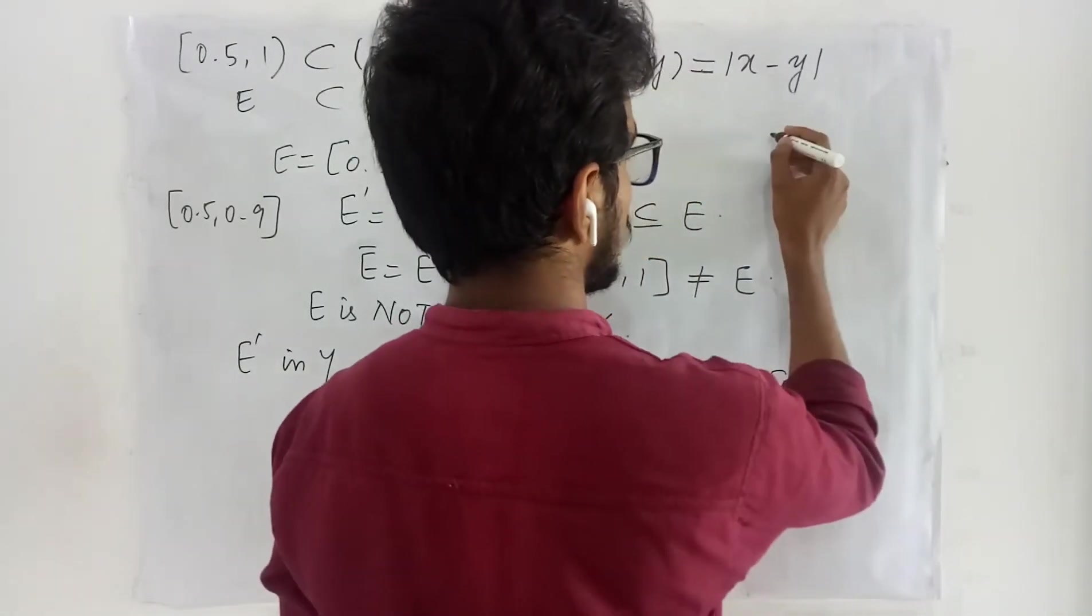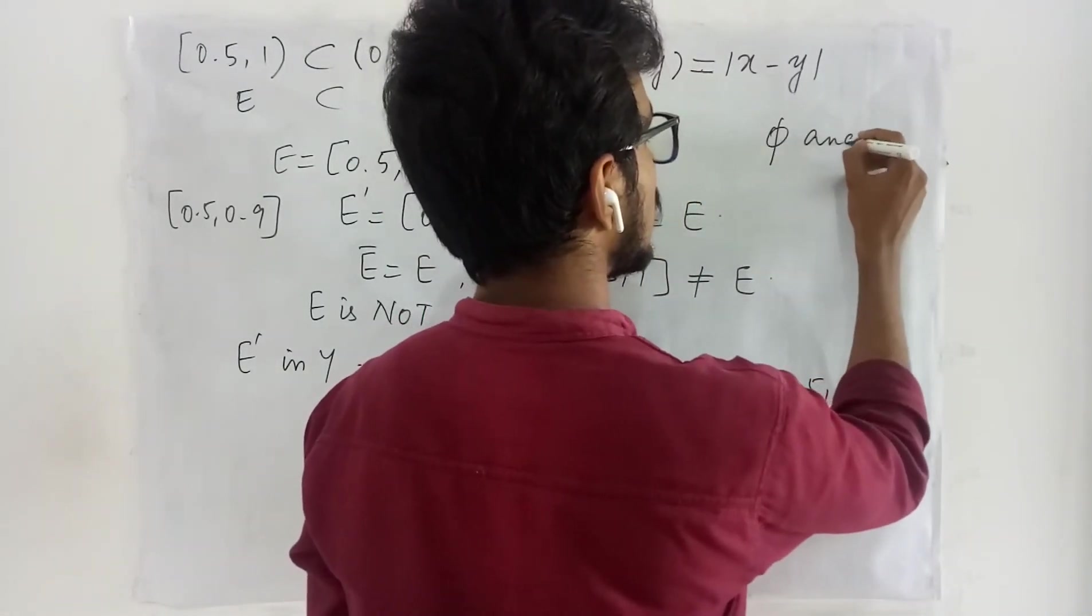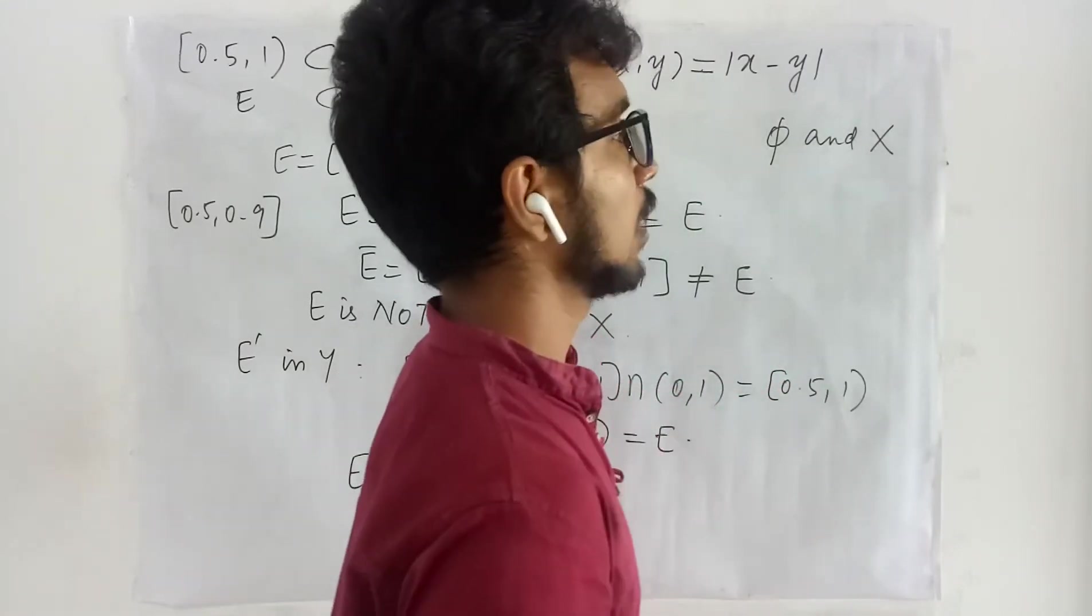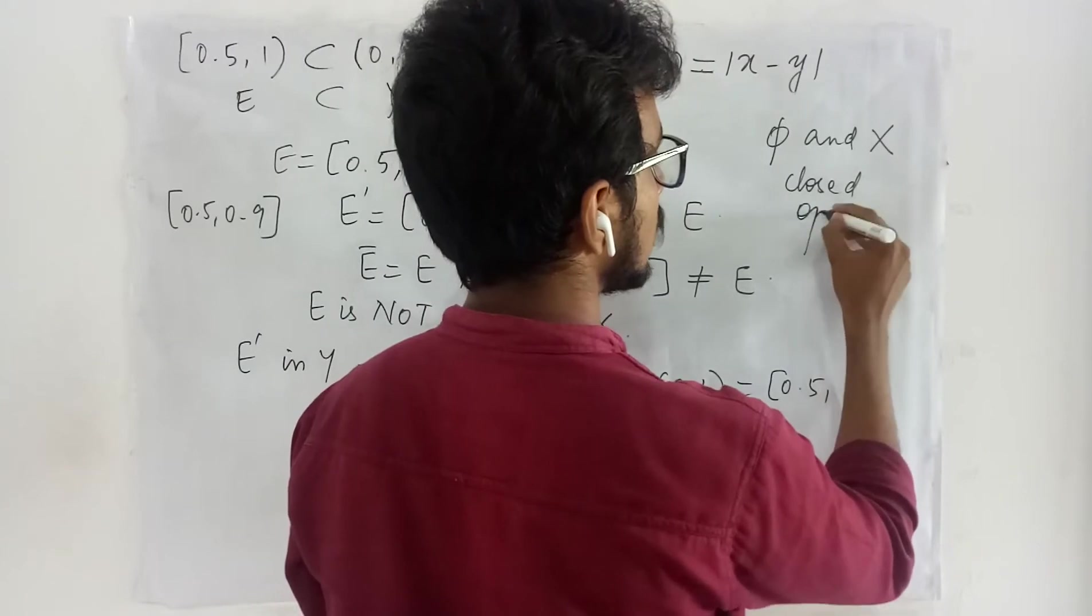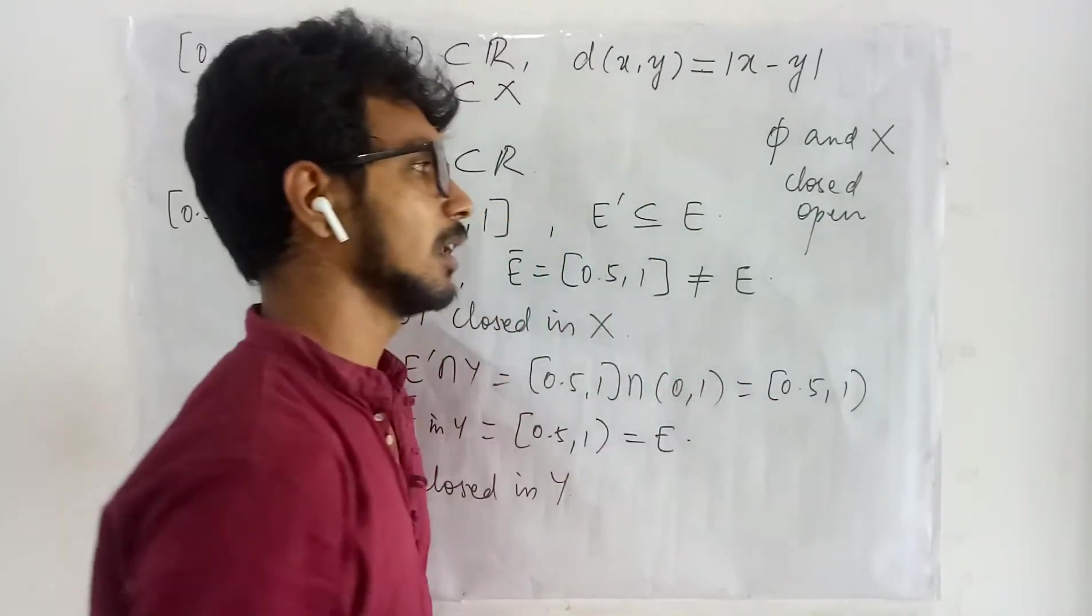And one more thing that you have to always remember is that the empty set and the whole set are always considered to be both open and closed in any metric space under any metric.